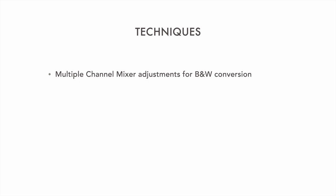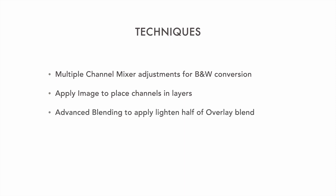This tutorial examines three different images to show how to blend the different RGB grayscale channel renderings into an idealized black and white image. We'll see how to use channel mixer adjustments for black and white conversions, how to use the apply image command to place individual channel renderings into layers, how to use advanced blending options to apply the light in half of an overlay layer blend mode, and how to use layer masks to selectively apply the different channel tone and contrast renderings to build the final image.